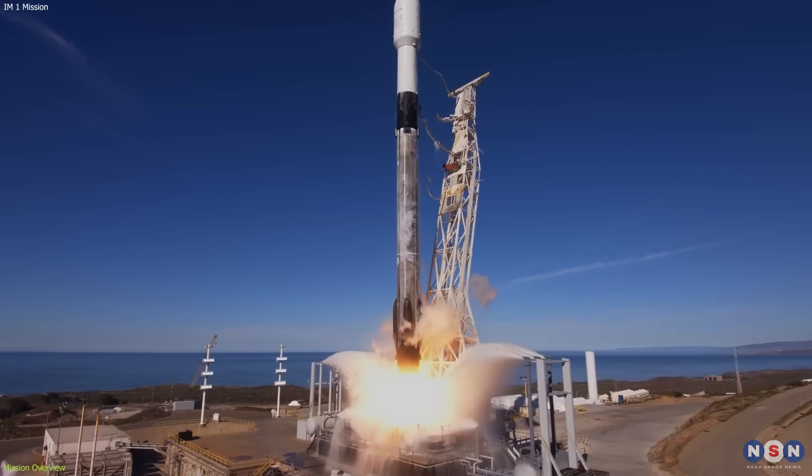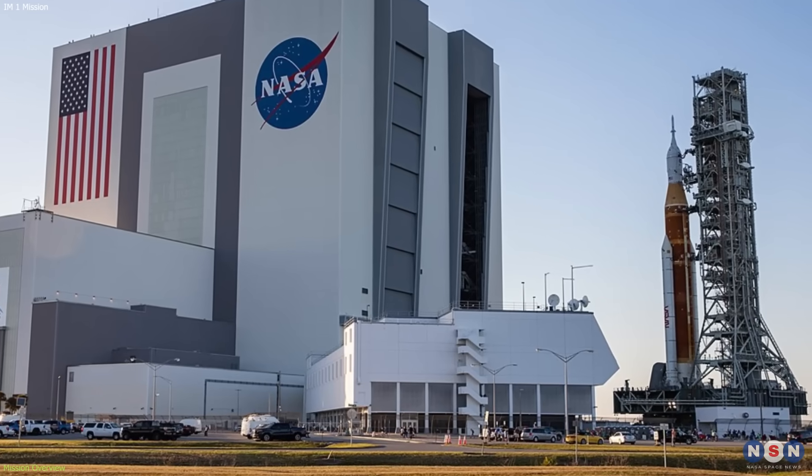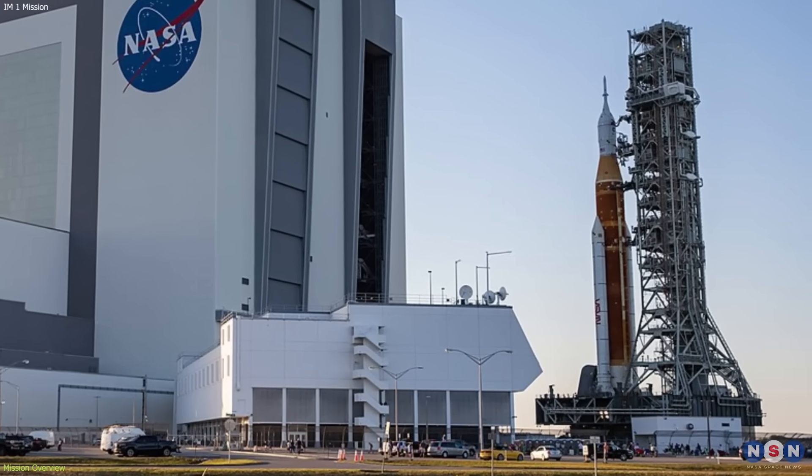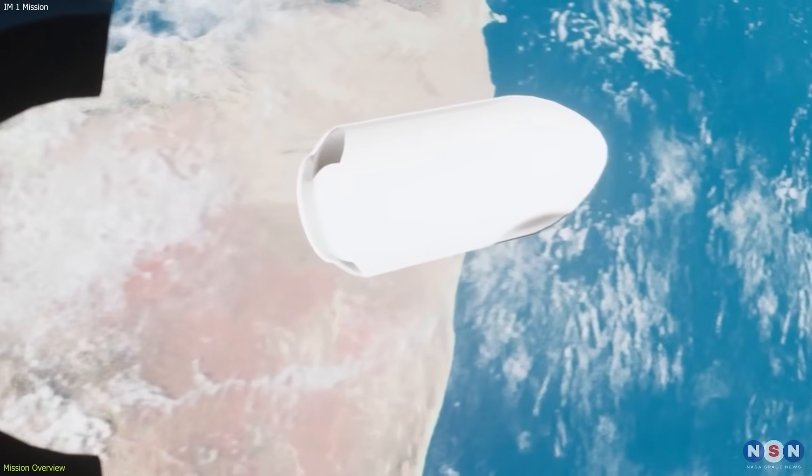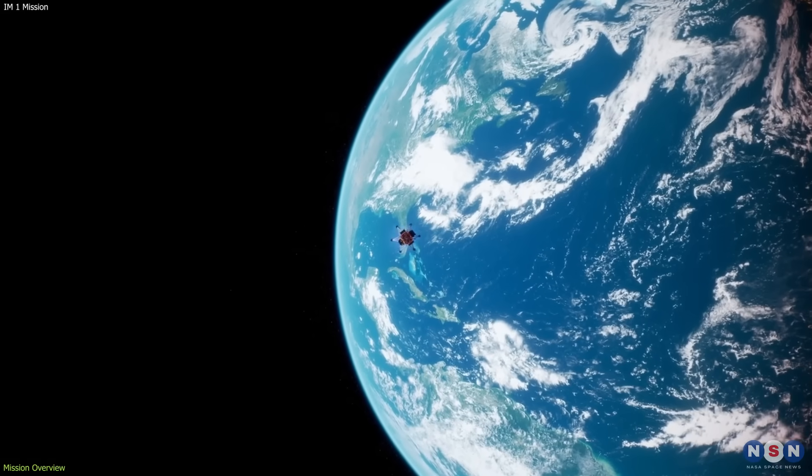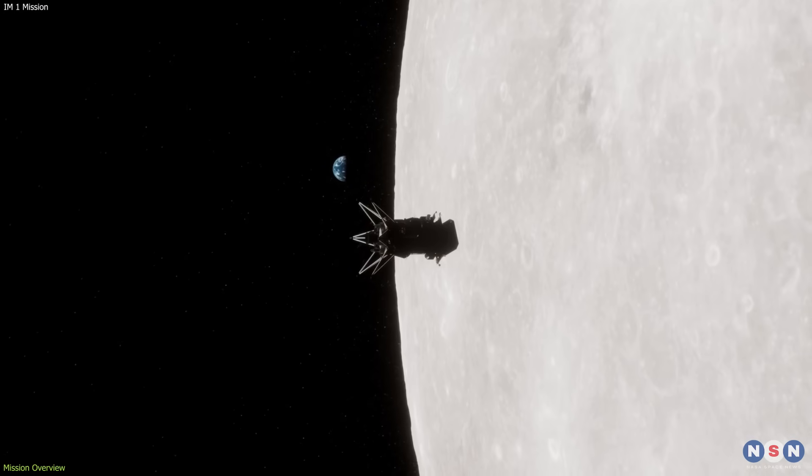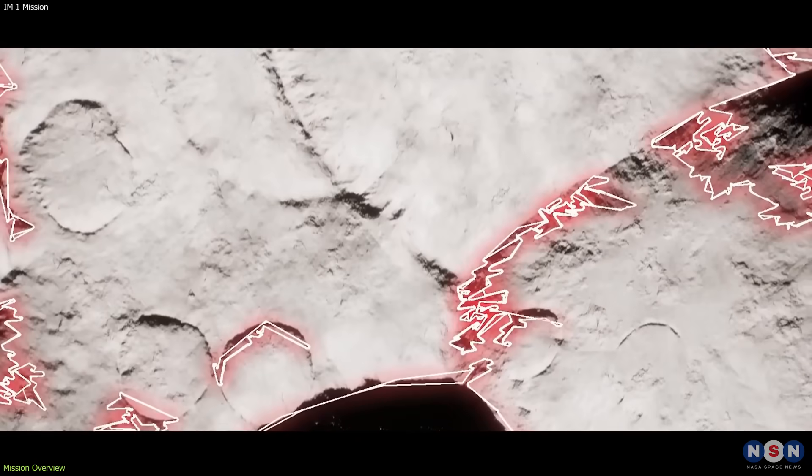The lander will launch on a SpaceX Falcon 9 rocket from Kennedy Space Center in Florida no earlier than February 14, 2024. The launch window is about two hours long, and the rocket will place the lander in a low-Earth orbit. From there, the lander will use its own propulsion system to perform several maneuvers to reach the Moon. It will enter a lunar orbit about four days after launch, and then it will descend to the surface using a combination of thrusters and a guidance system.